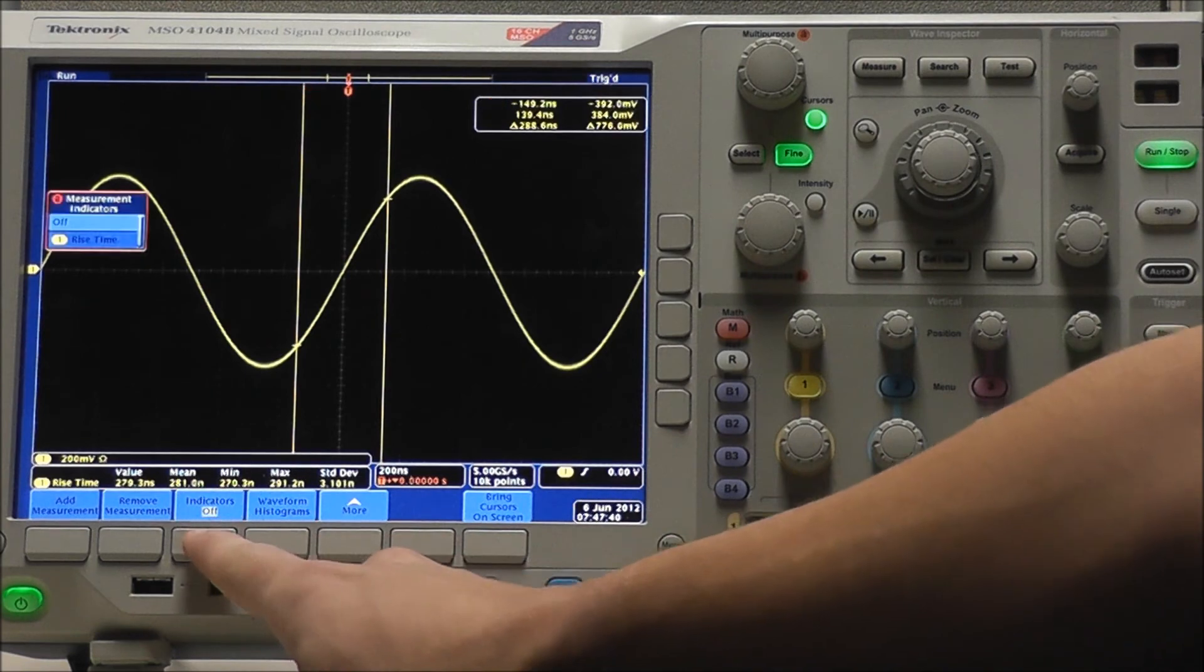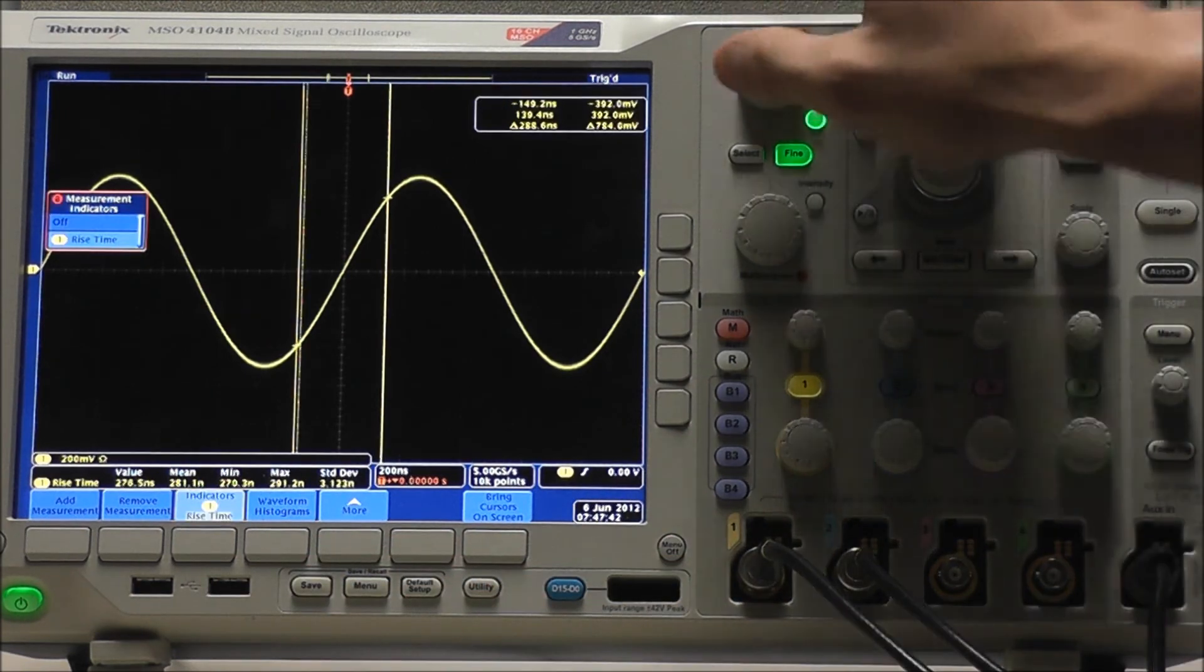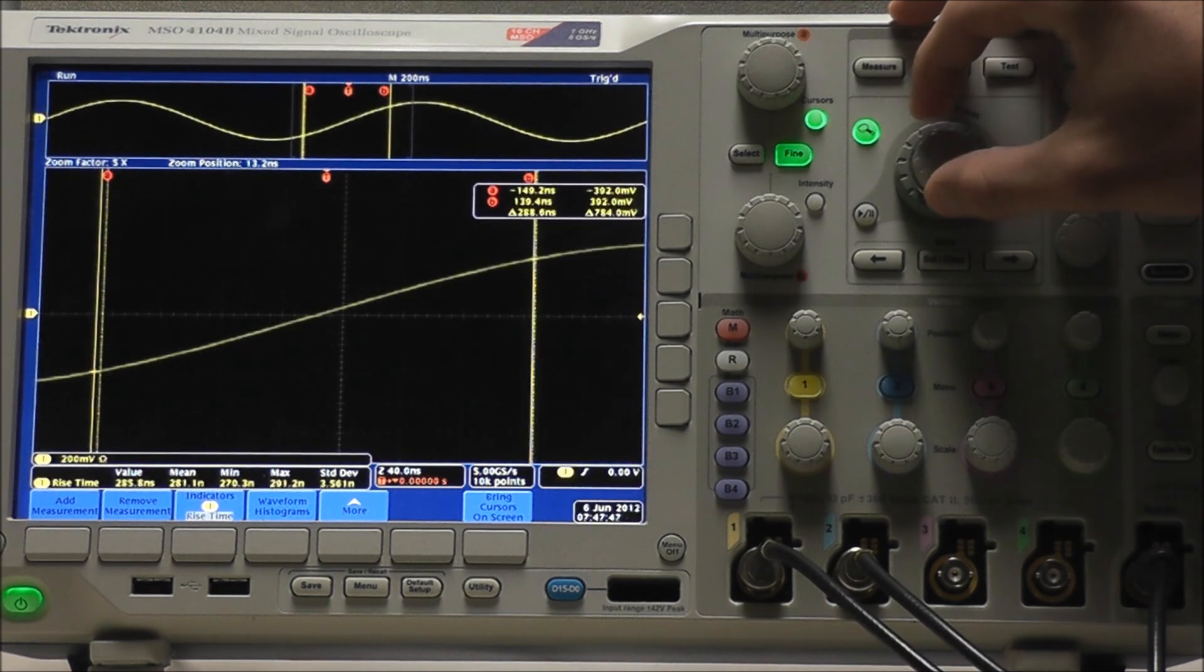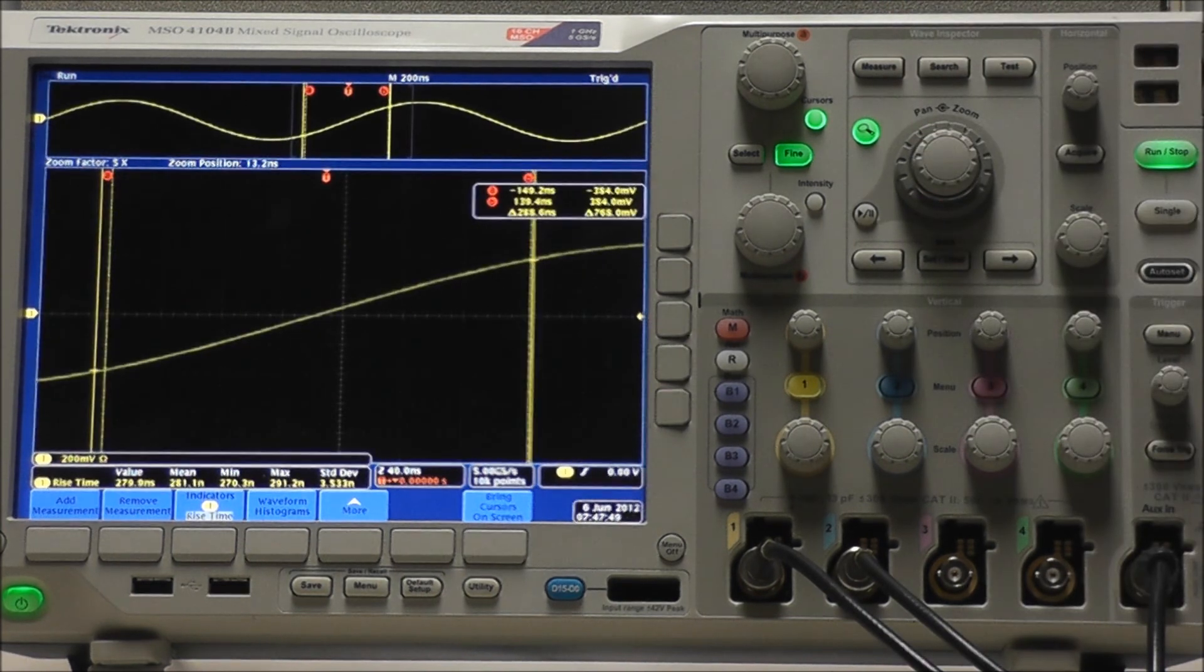And speaking of scaling in, if we select our indicators and turn them on, and then we scale on in, we can see how the machine's measurements differ from our own using the cursors.